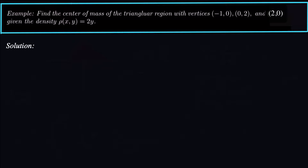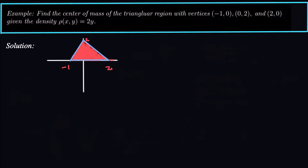We've got a triangular region with vertices at negative 1, 0; 0, 2; and 2, 0. We have a density function that tells us how the mass is distributed in the triangular region. The mass gets larger as we move in the y direction — it doesn't really depend on x, only on y. So let's look at this region first and then figure out how we're going to integrate to get the mass.